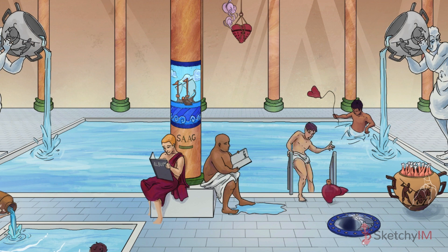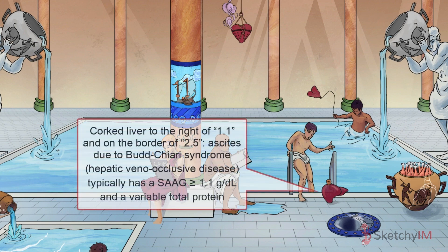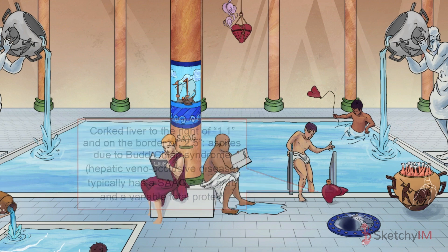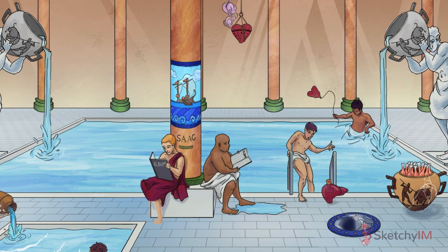Next, Budd-Chiari syndrome, which is caused by obstruction to venous outflow from the liver. This can occur due to a primary venous process such as thrombosis or phlebitis, or a secondary process such as malignant infiltration of the hepatic vein. In the acute version of this syndrome, this causes portal hypertension and ascites with a SAAG greater than 1.1. The total protein can be variable in Budd-Chiari syndrome, depending on whether it's presenting more acutely or chronically, because liver function and total serum protein vary accordingly.